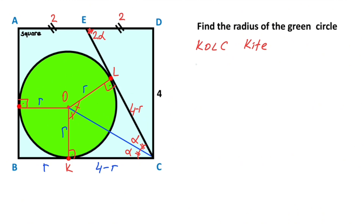Now if you focus on this triangle and we calculate tangent of alpha: tangent of alpha equals four over two, which equals two.